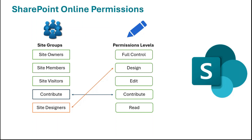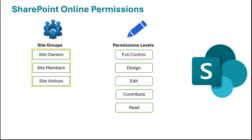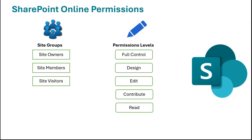The three default groups — site owners, site members, and site visitors — have assigned permission levels. The site owners group has full control permission, so users in that group have full control over the SharePoint site. The site members group has edit permission, and the site visitors group has read permission. Apart from these five standard permission levels, we can also create custom permission levels.